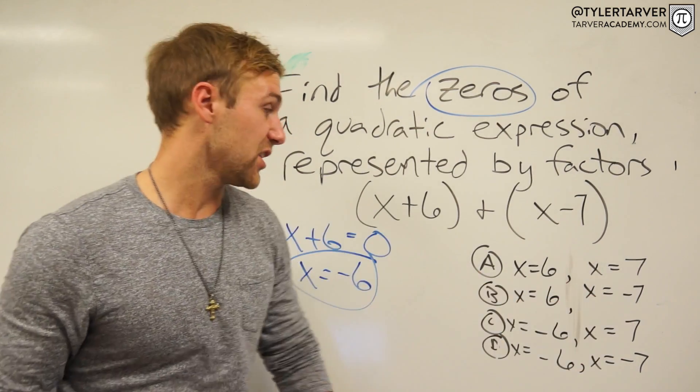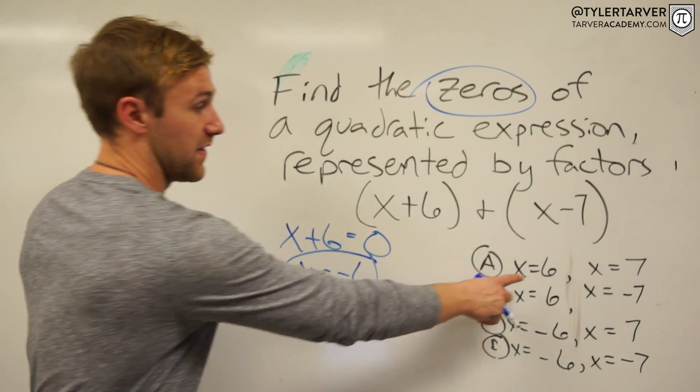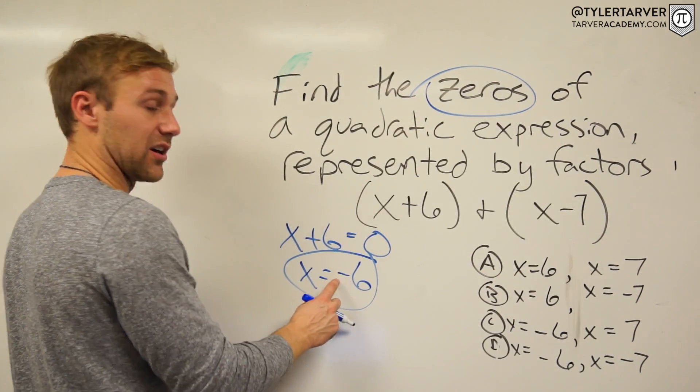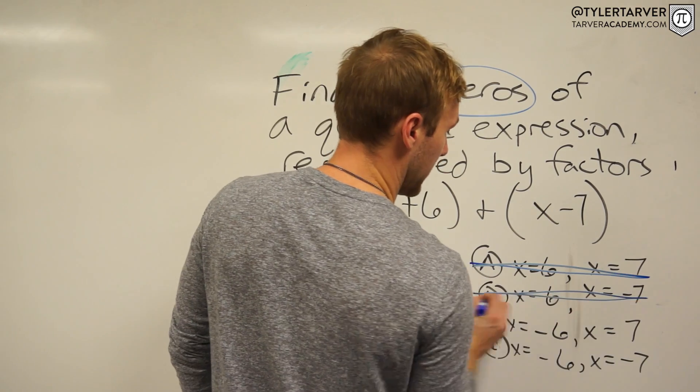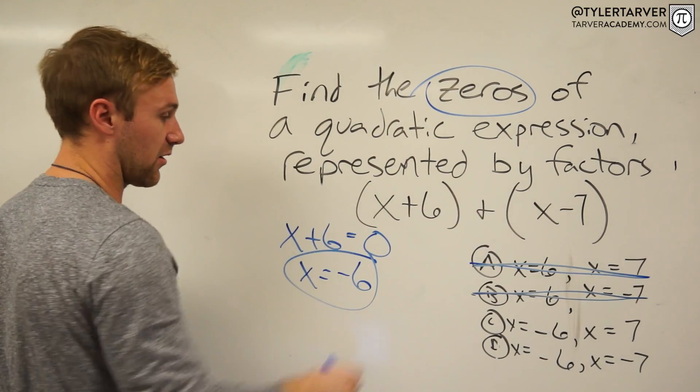Now I can use my process of elimination and go ahead and mark out something that don't work. That's a positive six. That's a positive six. We're looking for a negative six. So I know it's not a, I know it's not b. So it's one of these two.